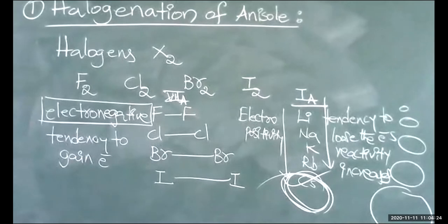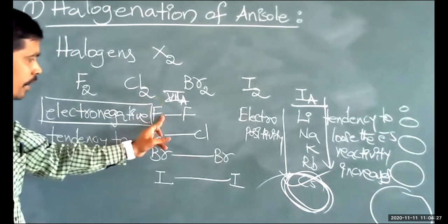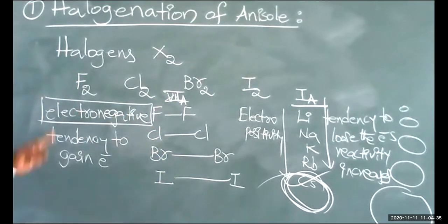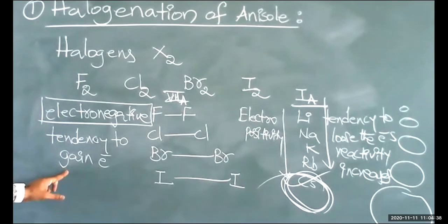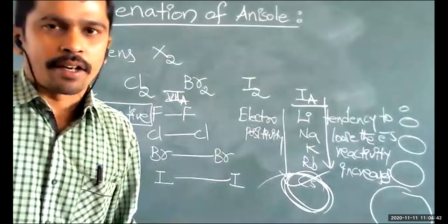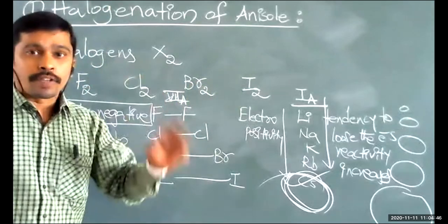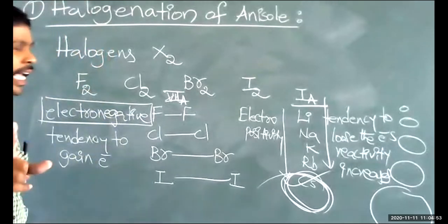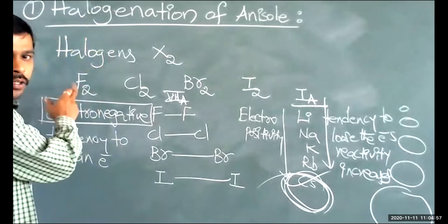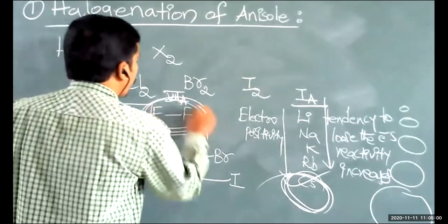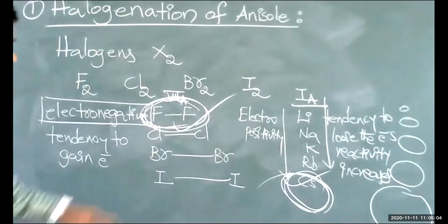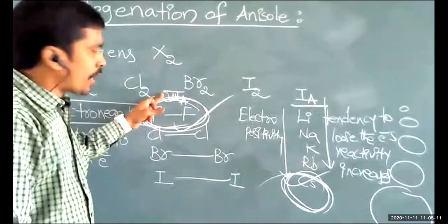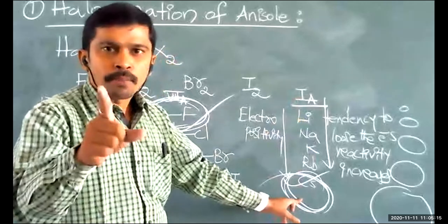For 7th A group elements, fluorine is highly electronegative and most ready to gain electrons, making F2 the most reactive halogen. The topmost element in group 7A is most reactive, whereas in group 1A, the bottommost element is most reactive — because group 7A elements are electronegative and group 1A elements are electropositive.